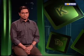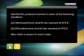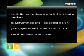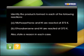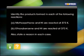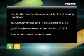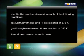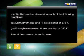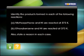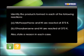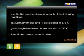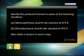Here is an example of how to write a perfect answer. Try this question: Identify the products formed in each of the following reactions. A. Methoxy ethane and hydrogen iodide are reacted at 373 Kelvin. B. Ethoxy benzene and HI are reacted at 373 Kelvin. Also state a reason in each case. The question is worth 2 marks and tests your conceptual ability.